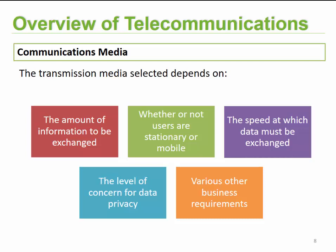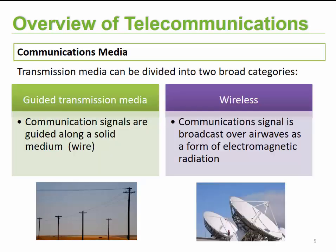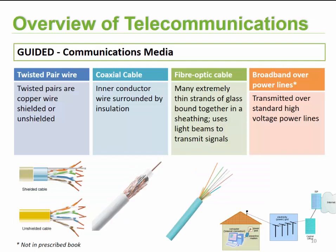Media can be divided into two categories: guided versus unguided or wireless communications. Guided transmissions are guided along a solid medium such as a wire or a fiber optic glass strand. Wireless communications are conducted over airwaves and form part of electromagnetic radiation. We'll go into each one in more detail.